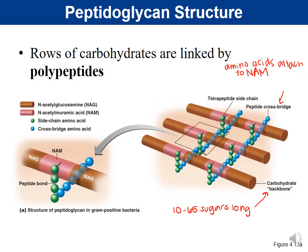Those amino acids are alternating D and L amino acids. In nature, most amino acids exist as L amino acids, but here they alternate between the D and L form. So our rows of carbohydrates are linked together by polypeptides.